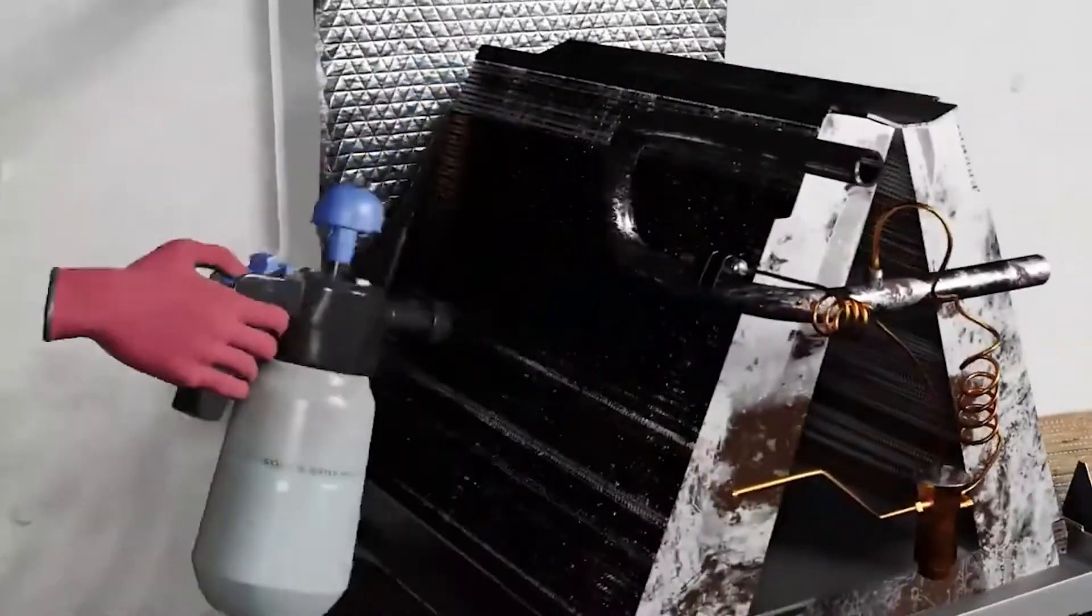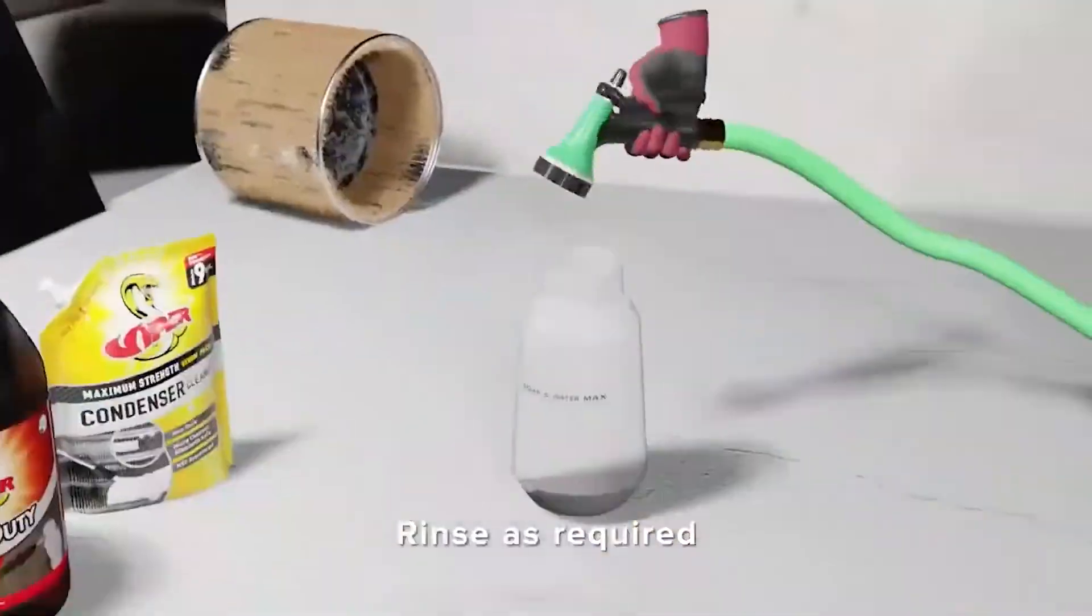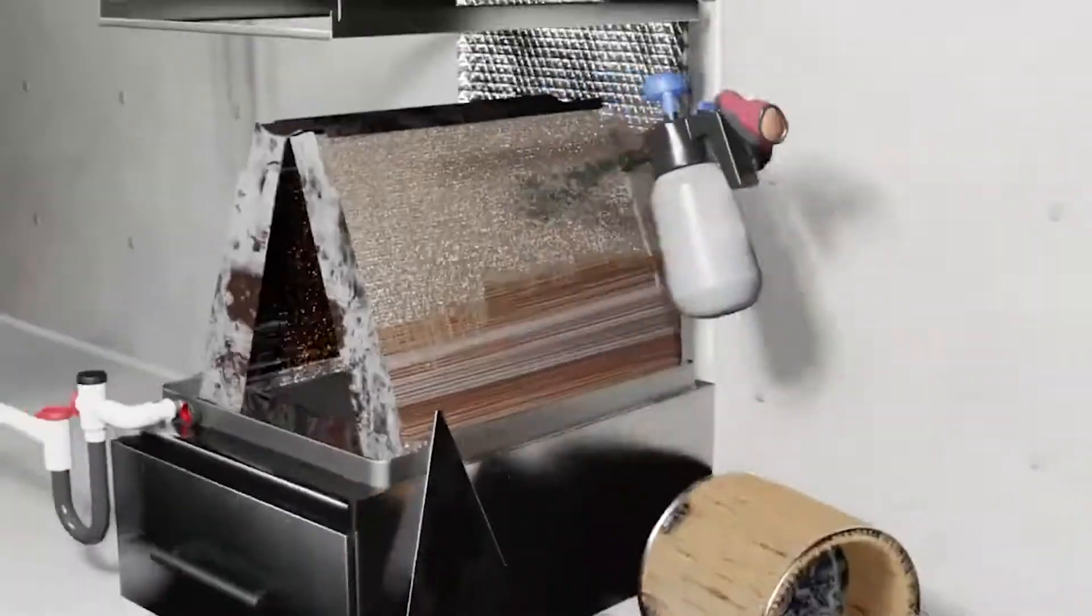Spray down the coil completely. Allow the cleaner to remain on the coil for several minutes before rinsing. However, it's worth noting that you are not required to rinse the evaporator if you use one of the Viper Evaporator Cleaners appropriately diluted.